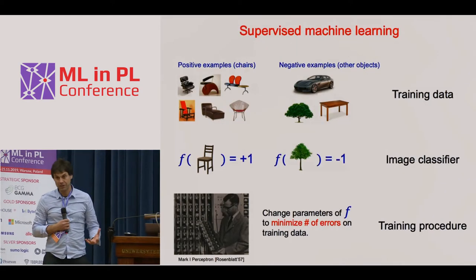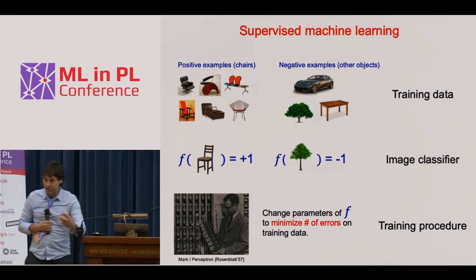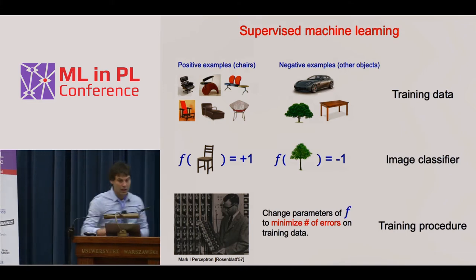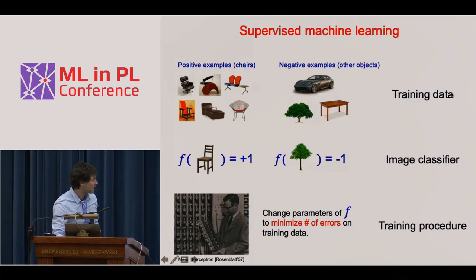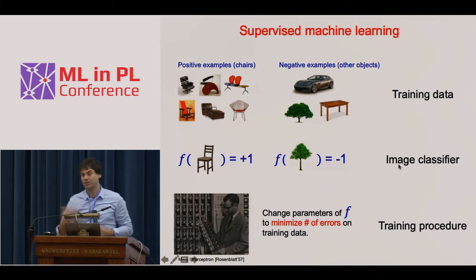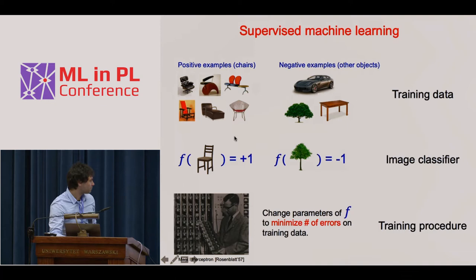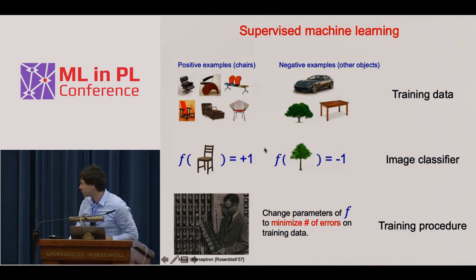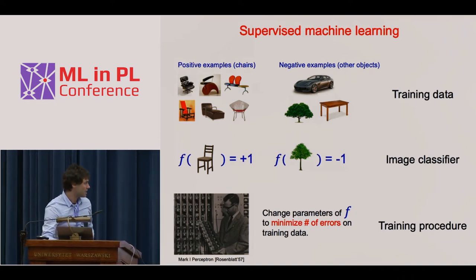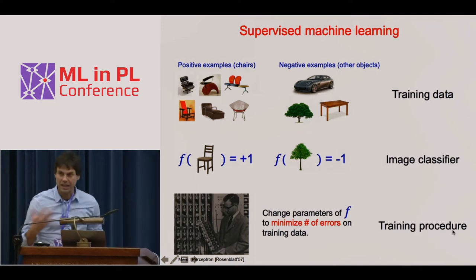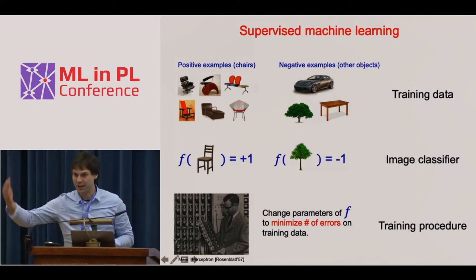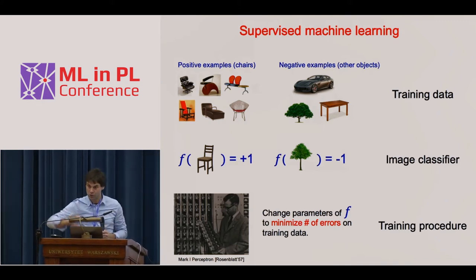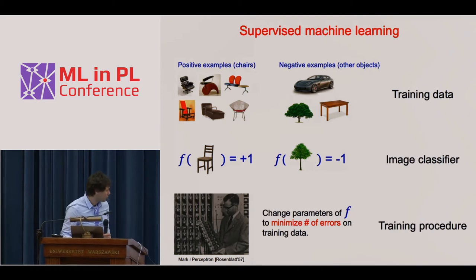The current approach is to learn the representation from data, which requires three key ingredients. First, you need training data — here, positive examples of chairs and some negative images of other objects. Second, you need an image classifier: a function that takes an input image and produces an output label — plus or minus one — indicating whether the object is in the image. Third, you need a training procedure. The function f has parameters, like knobs on a machine, which you adjust to produce the desired outputs on the training data.